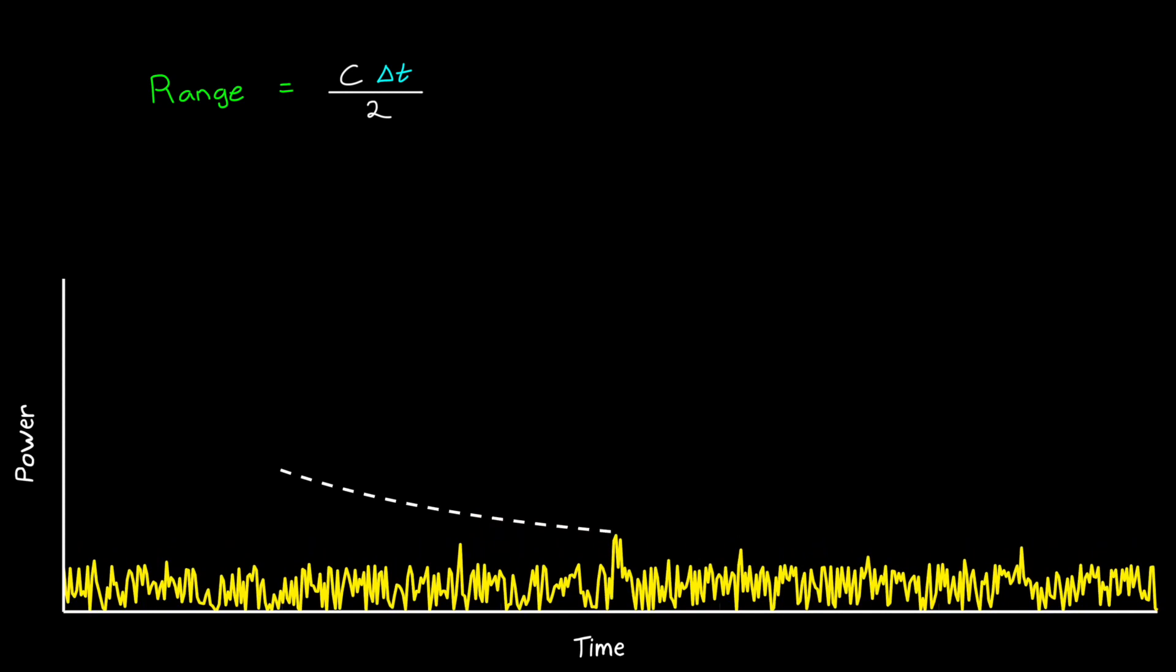Which brings us to the second thing that I want to talk about, the signal-to-noise ratio, and the threshold at which an object is detectable.